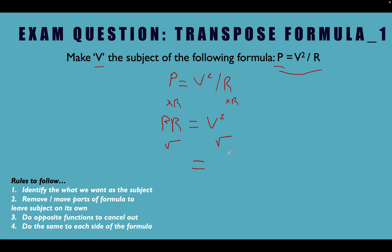Now what does our formula look like? So we had P times R. We've put a square root above it. So now it's going to look like this. The square root of P times R is equal to what? We had V squared and we've applied a square root to it, which is the opposite of square.